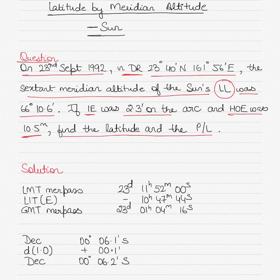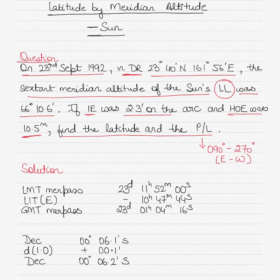In questions of latitude by meridian altitude, the position line is always 090 to 270 degrees, or you can write it as an east-to-west position line. Irrespective of any celestial body — whether it is sun, moon, stars or planet — if it is a latitude by meridian altitude question or a meridian passage question, the position line is always 090 degrees to 270 degrees.